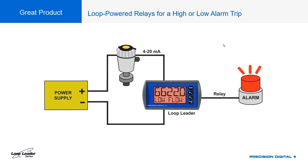Although the Loop Leader is a loop-powered device, its relays allow it to go beyond just displaying information next to a tank. Those relays can directly drive equipment or drive external control relays to set off sirens, send signals to PLCs, or turn on light stacks. This makes it more than a display — it's a controller — and it's generally lower cost than a four-wire or externally powered equivalent device.